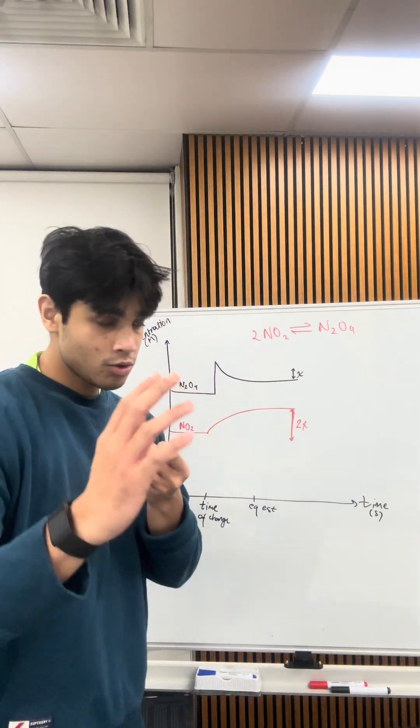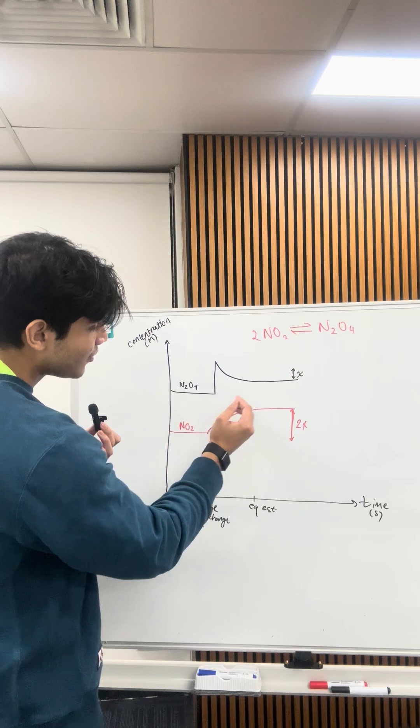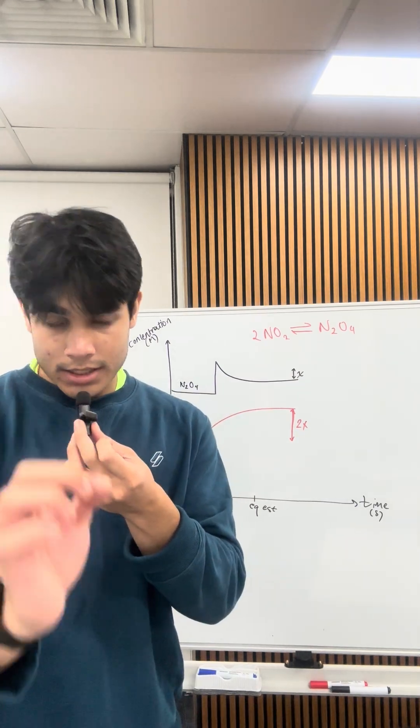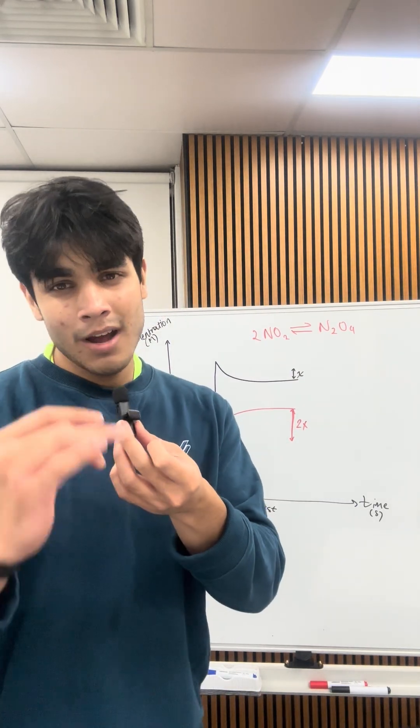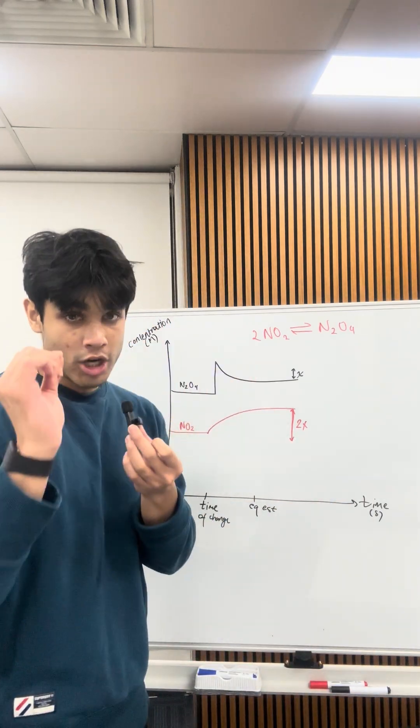Now, in terms of your actual graphs, make sure they're the steepest at the very beginning, and make sure they flatline at exactly the same point in time and label that as equilibrium established. This is going to be absolutely crucial to you guys actually getting the marks for the shape.